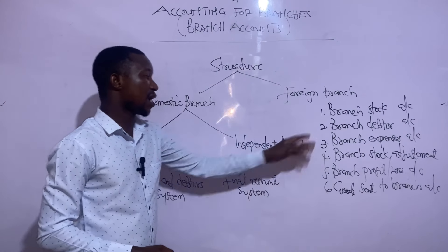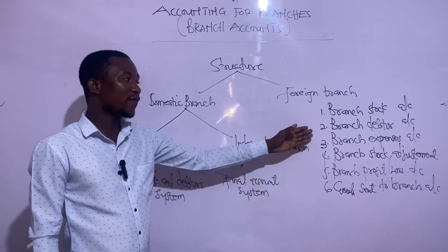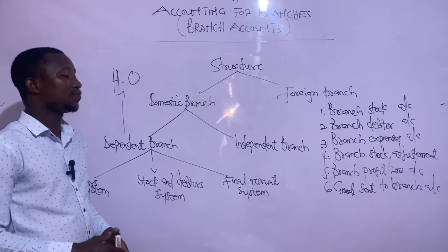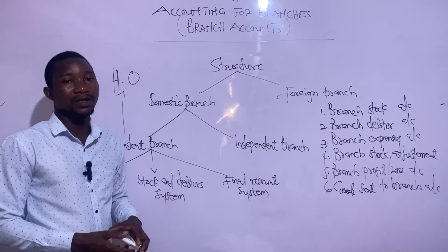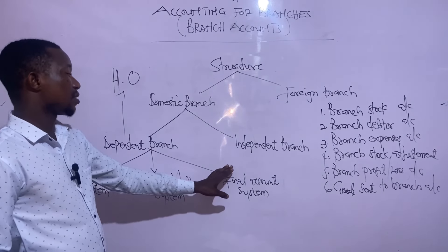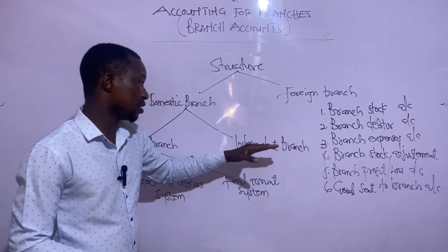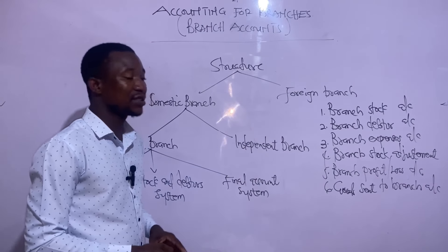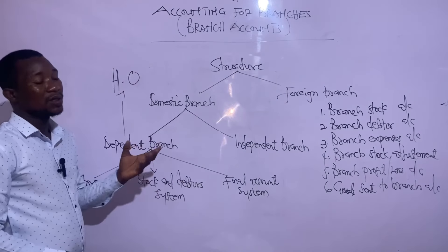These six accounts are kept under the stock and debtors system. Under the final accounts system, the branch prepares a complete set of accounts — starting from the journal, a trial balance, trading profit and loss account, and balance sheet. This final accounts system also falls under the dependent branch. Now, every foreign branch is an independent branch — also called an autonomous branch — and prepares its own set of books.